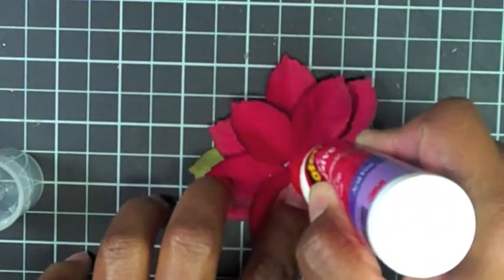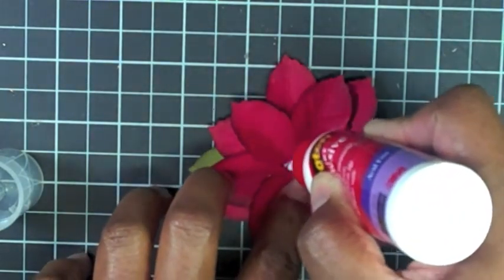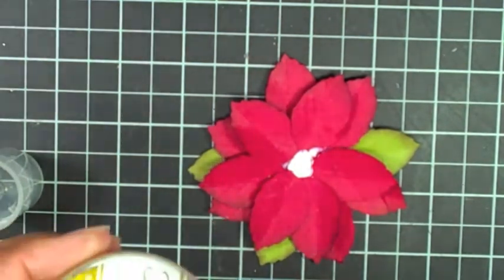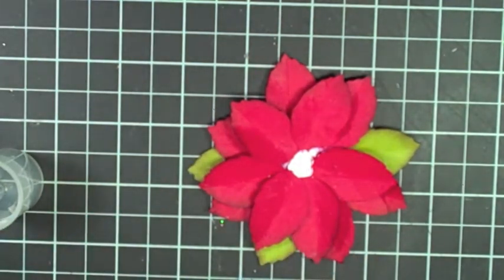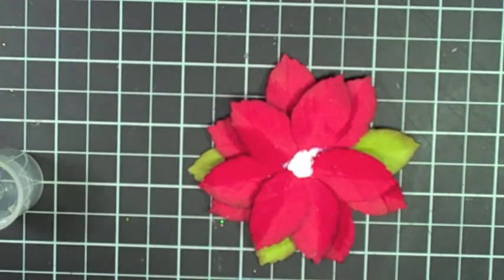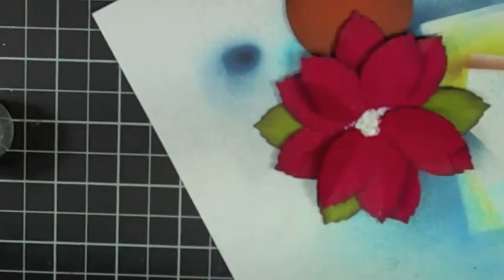I'm going to put some adhesive in the center. Lots of it. And I'm going to take some flower soft. I'm going to bring in some paper that I can use. And I think I just lost a petal.